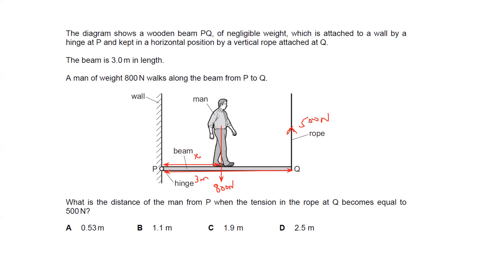The tension in the rope means force in the rope, equal to 500. The weight of the man causes a clockwise rotation, and the tension in the rope will try to cause an anticlockwise rotation. Because it is in equilibrium, we consider the object is balanced.